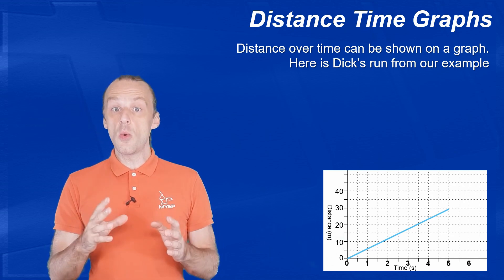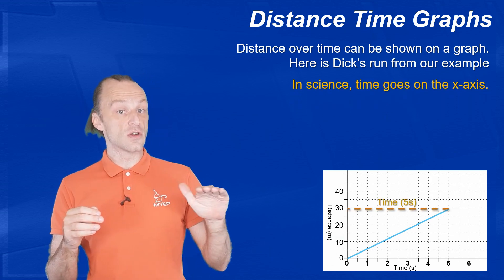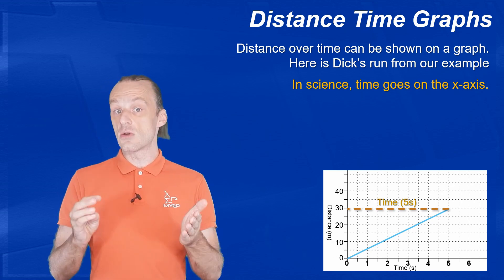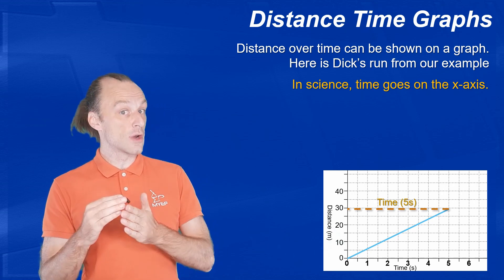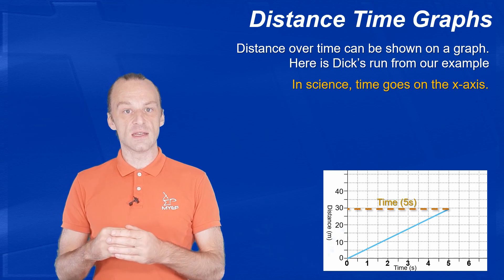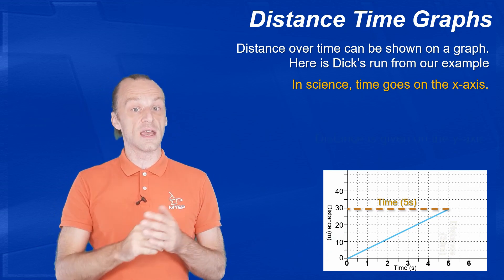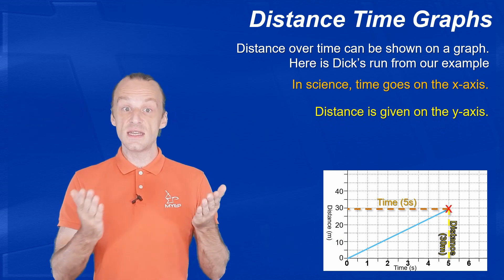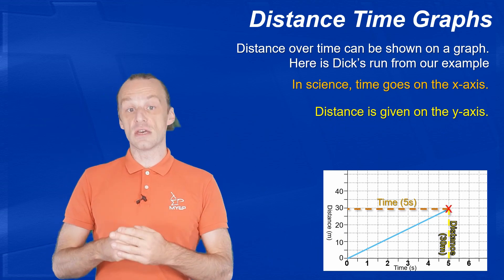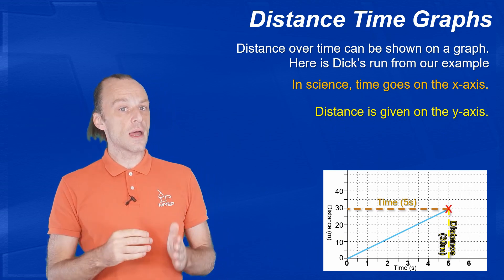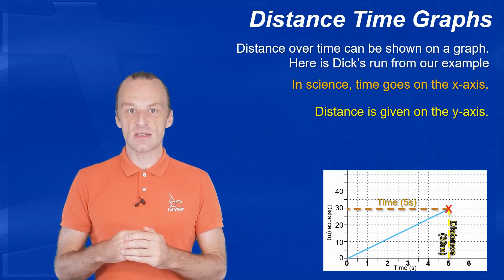In science, we always put time on the horizontal x-axis, and so here you can see the time runs along 5 seconds. And then we show other things on the vertical y-axis. So in this case, distance goes up by 30 meters. So Dick's run is shown by the point labeled as x.